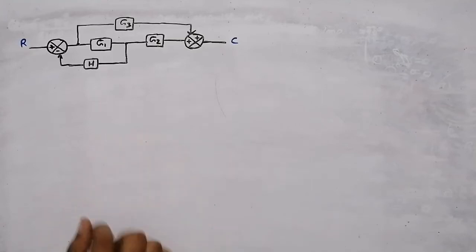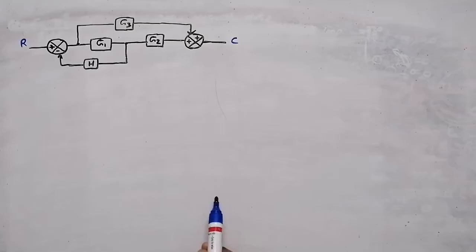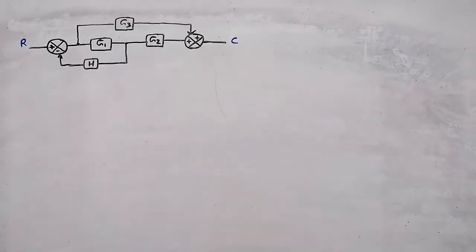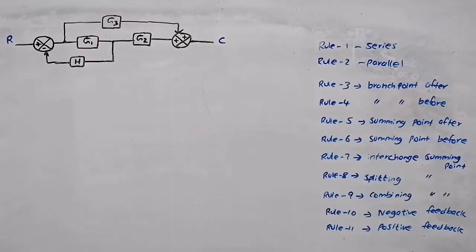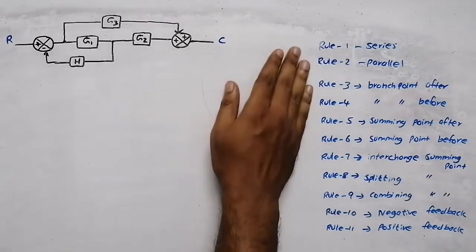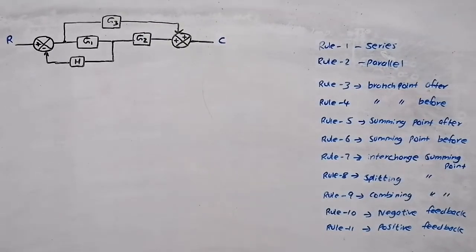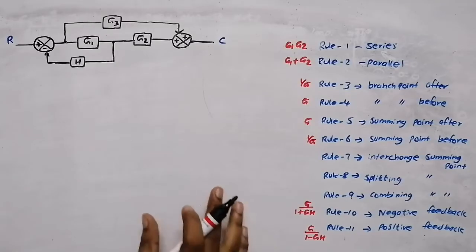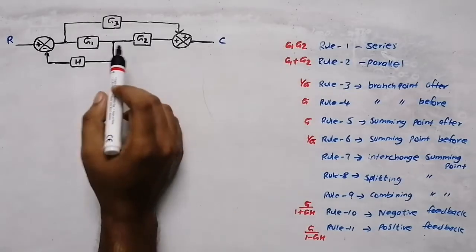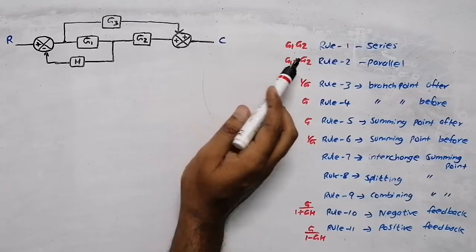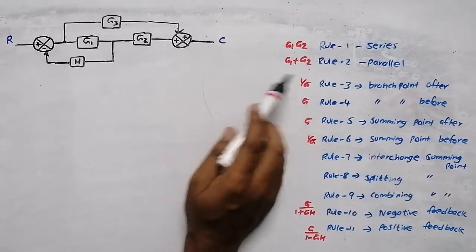We are going to reduce this block diagram. First of all, check whether there is any block in series or parallel. In the previous video we discussed the 11 rules for doing block diagram reduction. In this question, there are no blocks in series and no blocks in parallel, so the first two rules we can't apply.